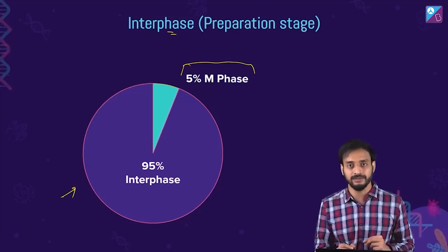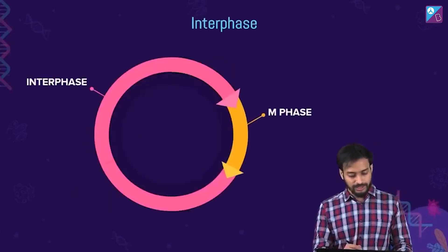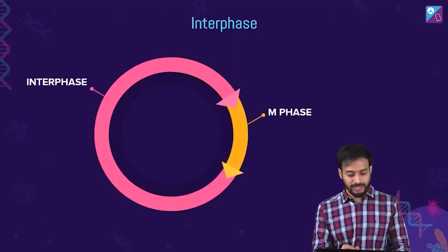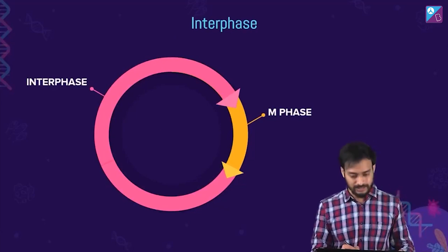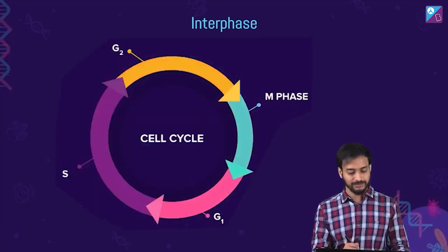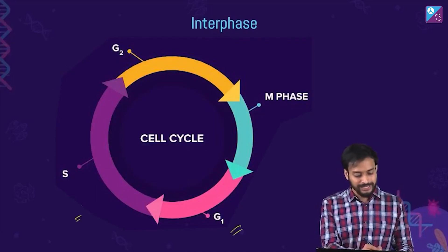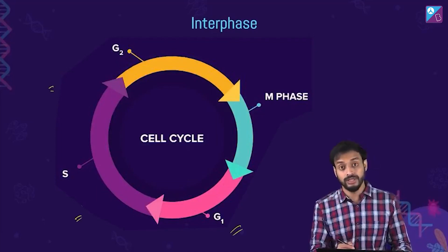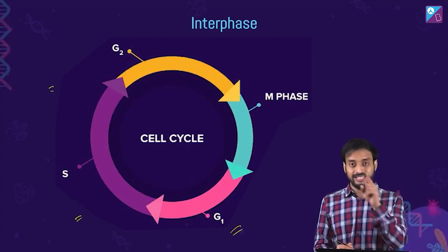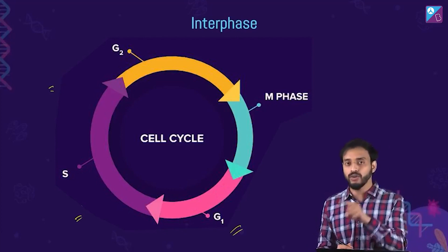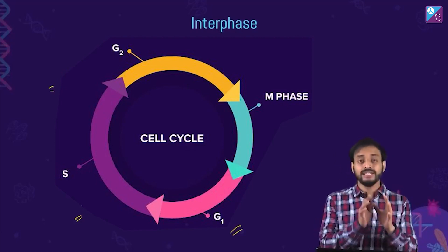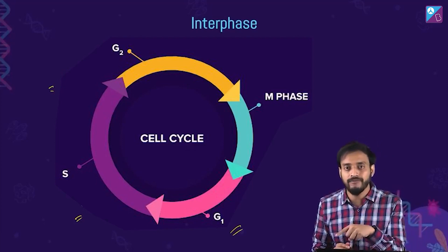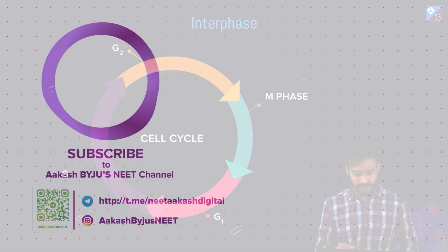Interphase has been divided into three sub-phases: G1, S, and G2. This is the sequence you have to remember — when a cell is dividing, it follows G1, then S phase, then G2 phase. G1, S, and G2 are all part of interphase, not the M phase.